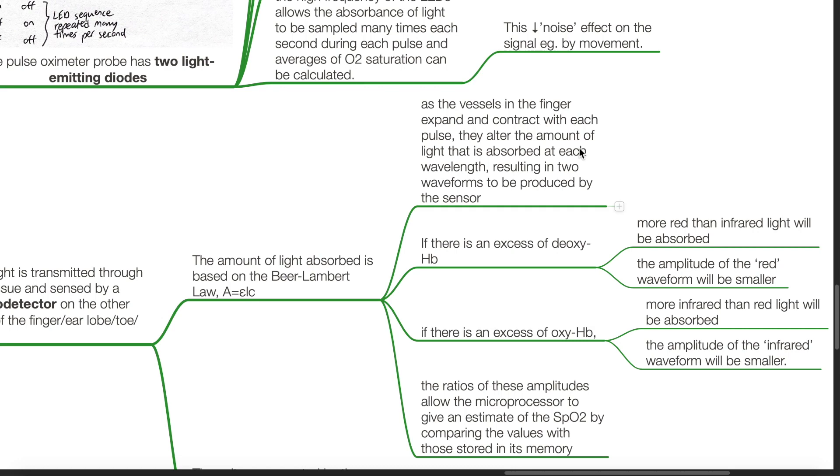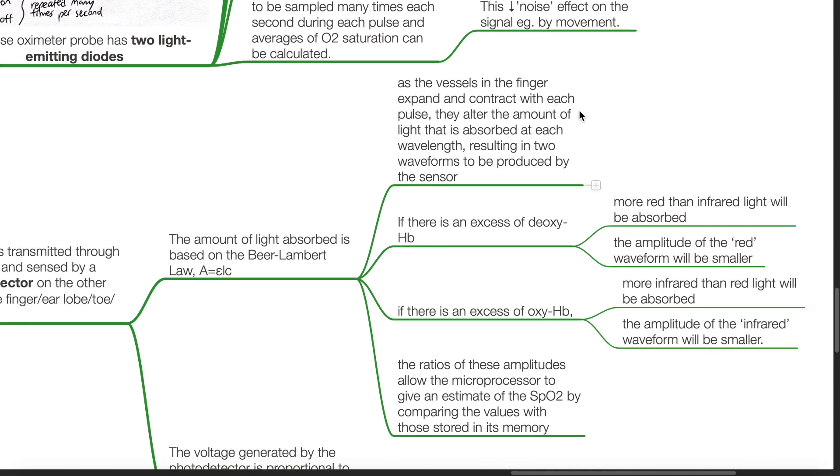As the vessels in the finger expand and contract with each pulse, they alter the amount of light that is absorbed at each wavelength, resulting in two waveforms produced by the sensor. If there is an excess of deoxyhemoglobin, more red than infrared light will be absorbed and the amplitude of the red waveform will be smaller. If there is an excess of oxyhemoglobin, more infrared than red light will be absorbed and the amplitude of the infrared waveform will be smaller.